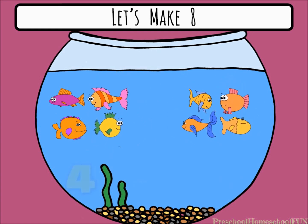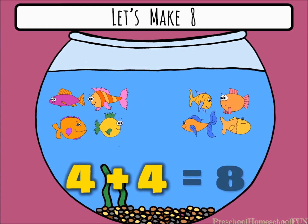Now look at that — four fish swim to the side. We now have two groups of four. Four plus four equals eight.